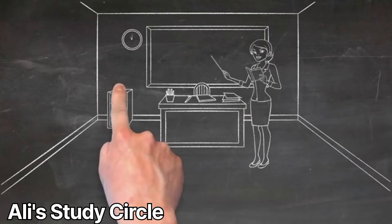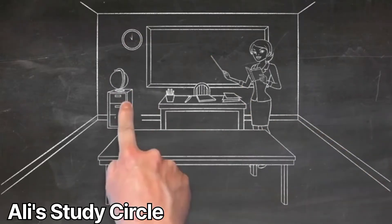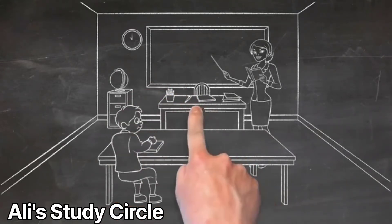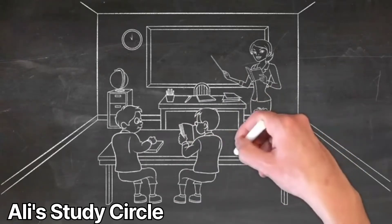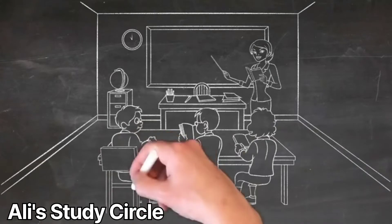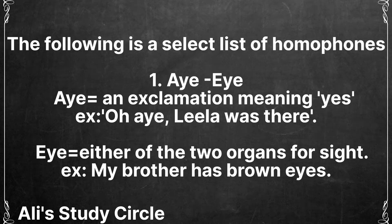Hello friends, welcome back to your channel. In the last videos we have discussed about a lot of grammar contents in English language. Now in this video we are going to discuss about the topic that is homophones. A word which is similar and identical with another word in sound and pronunciation but of different meaning and origin is known as a homophone.